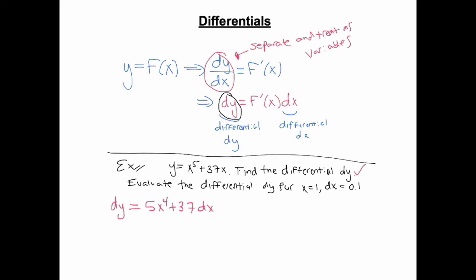If we want to use this to find dy when x is 1 and dx is 0.1, we're just going to substitute those in. So I'll put in a 0.1 here, and I'll put in a 1. So dy in that particular instant ends up evaluating to 5 plus 37 times 0.1, which is 42 times 0.1, and that ends up giving you 4.2.